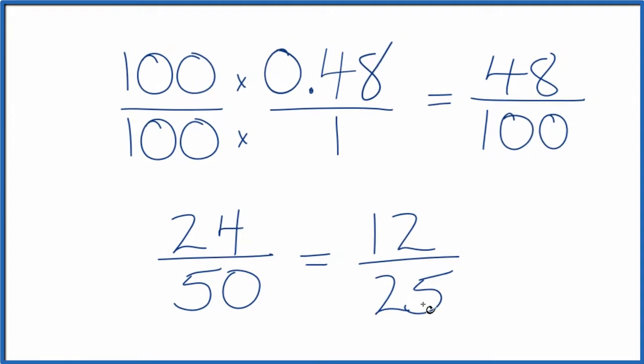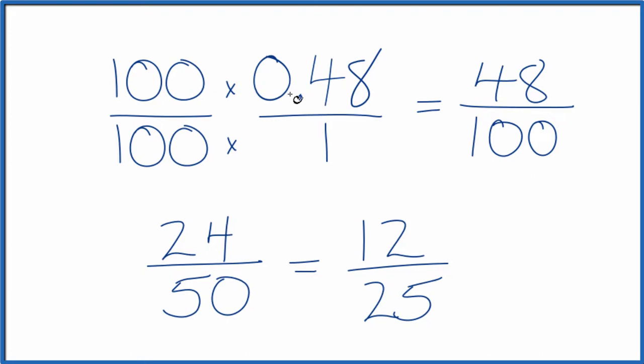We can't reduce this any further. So the decimal 0.48, that's equal to 12 over 25 as a fraction. If you divide 12 by 25, or 24 by 50, or 48 by 100, you will get 0.48. This is Dr. B, and thanks for watching.